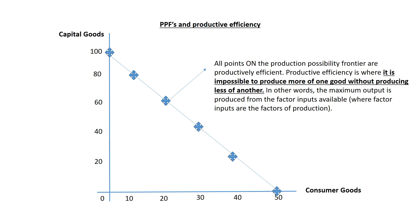We can show productive efficiency on a production possibility frontier. Any point on the production possibility frontier is productively efficient because it is impossible to produce more of one good without producing less of another. Let's start off at a point where we're producing 20 consumer goods and 60 capital goods. In order to produce more consumer goods, I would have to produce fewer capital goods, as I cannot exceed my maximum output. To produce more consumer goods, I would first have to produce fewer capital goods. That means all of these points on your PPF are productively efficient.